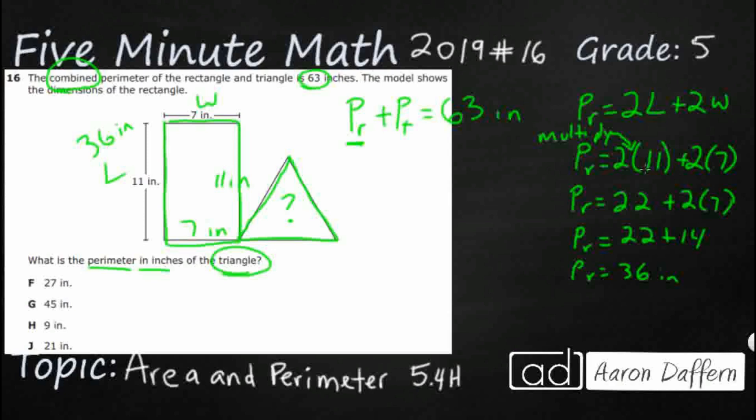So we've got 36 inches all the way around there. So now we can put this in here. So we've got 36 inches plus whatever this perimeter of the triangle is, equals 63 inches.